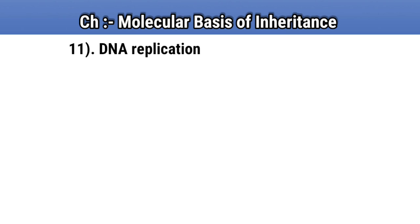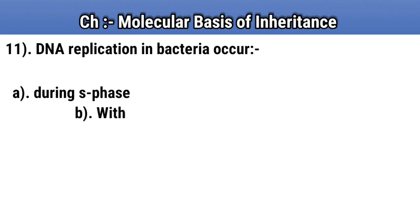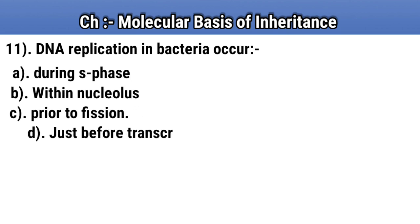Question number 11. DNA replication in bacteria occur. Option A: during S phase. Option B: within nucleolus. Option C: prior to fission. Option D: just before transcription.